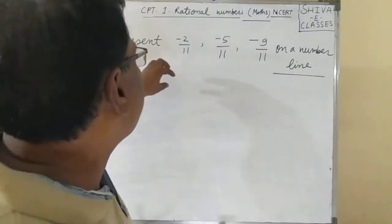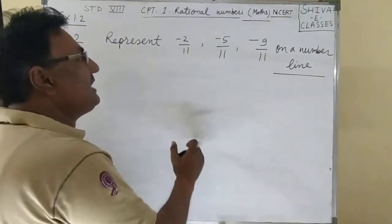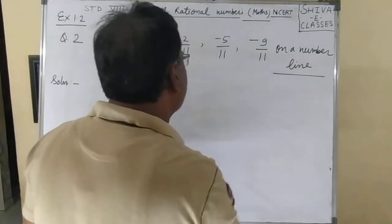Represent -2/11, -5/11, -9/11 on a number line.